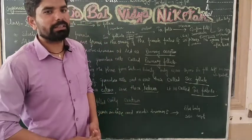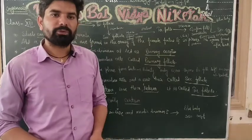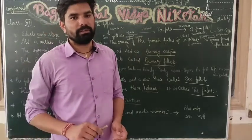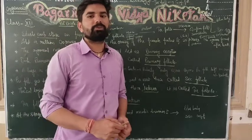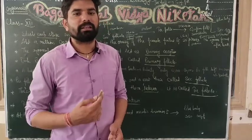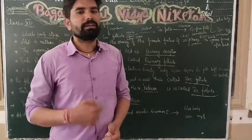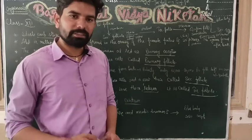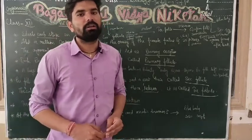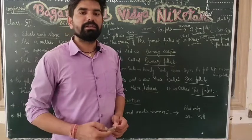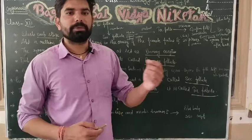Let us first revise spermatogenesis. The primary structures were spermatogonia. From spermatogonia, the first division produces primary spermatocytes, then secondary spermatocytes through the second meiotic division. After differentiation, spermatids are formed. One spermatogonium forms four spermatids, which further differentiate into spermatozoa.